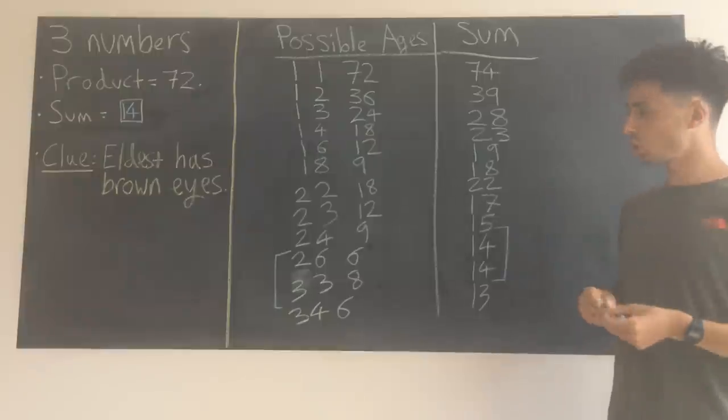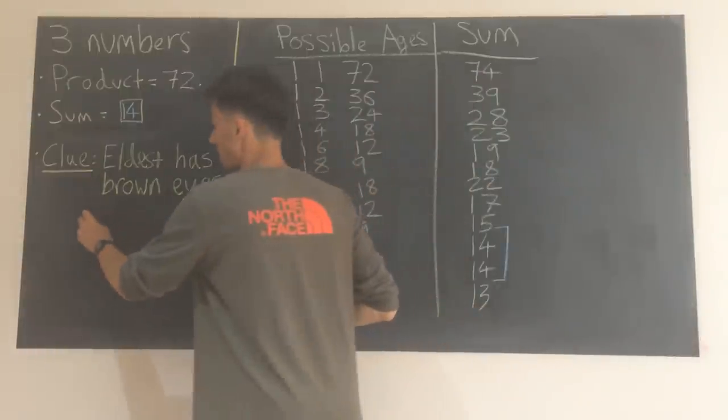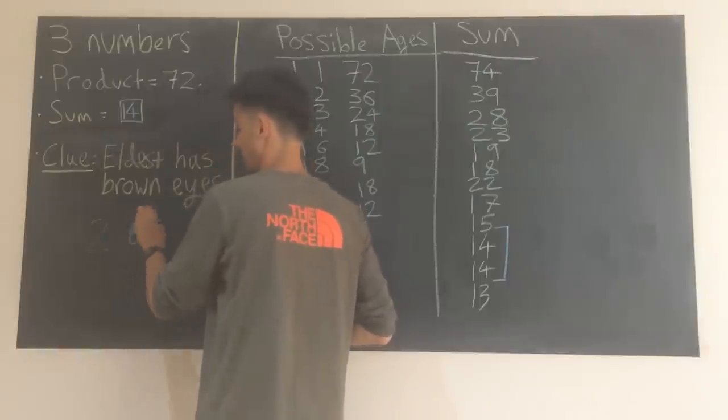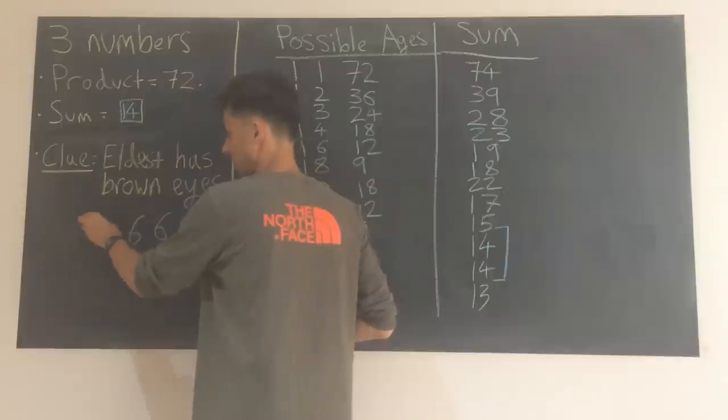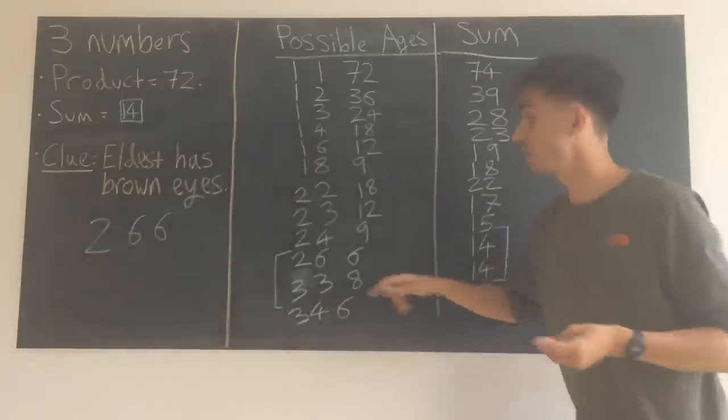This is where we use the clue though. And we can think about our two combinations. Either the daughters are age 2, age 6 and age 6. Let me improve my 2 a bit. Or they're age 3, 3 and 8.